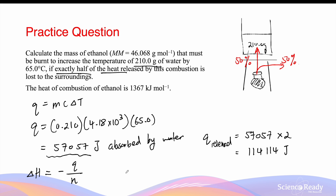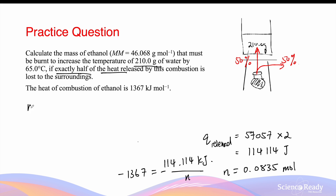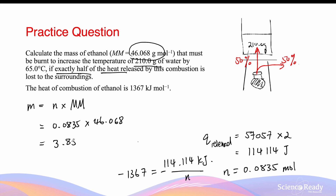We know that the heat of combustion of ethanol is minus 1367 kilojoules per mole. This is equal to the energy, which is 114,114 joules. We need to make sure that in the same equation, the unit of the heat of combustion and the energy that's produced have the same units. So this is in kilojoules per mole, so therefore this also must be in kilojoules. And we divide this by the number of moles. So moles equals to 0.0835 moles. Finally, to find the mass, we can multiply the moles by the molar mass of ethanol: 0.0835 moles multiplied by the molar mass given by the question, 46.068 grams per mole. And this gives us a mass of 3.85 grams, and we'll leave this as three significant figures.